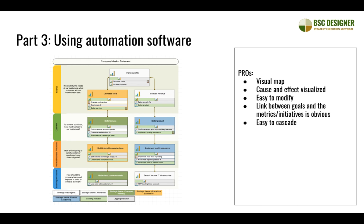If I need to cascade this map, the software provides tools to link goals in this scorecard to goals or indicators in another scorecard, so cascading is also easy. If I need to involve more team members, I can. Because this is specialized software, I can assign specific access rights to scorecards, KPIs, values, targets, and baselines — deciding who can edit or modify certain data — giving a lot of flexibility in organizing teamwork.